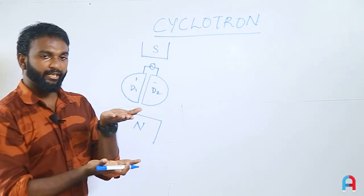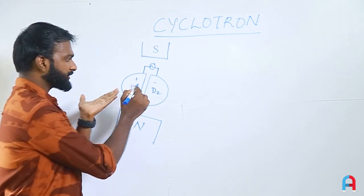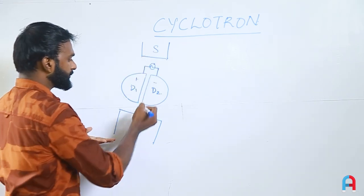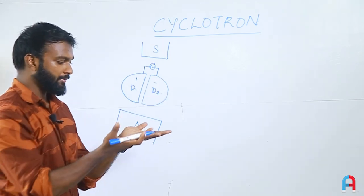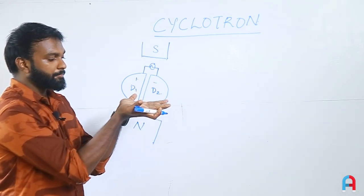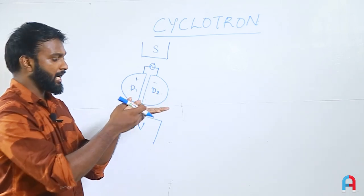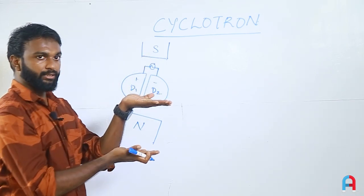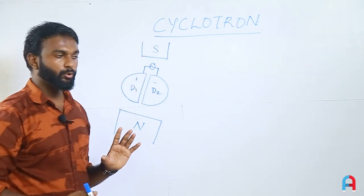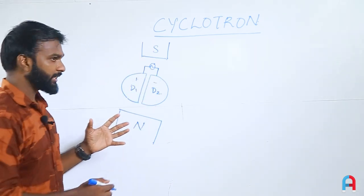The electric field is applied in a horizontal direction. The magnetic field is applied from south to north, and the electric field and magnetic field are perpendicular to each other. This is the main apparatus arrangement of the cyclotron.